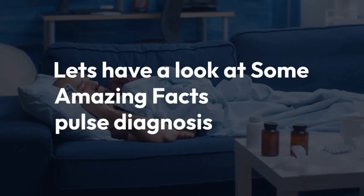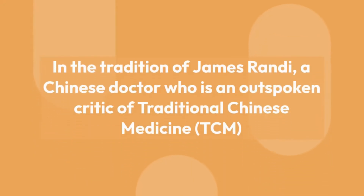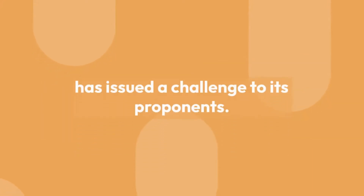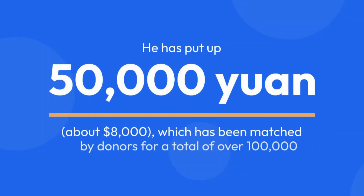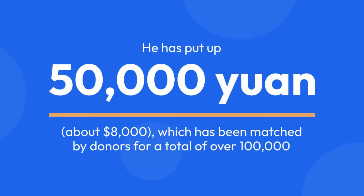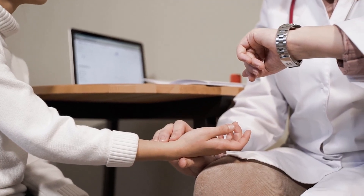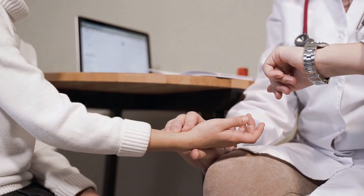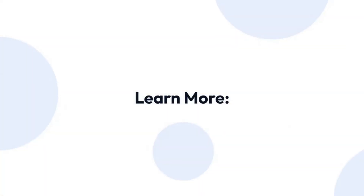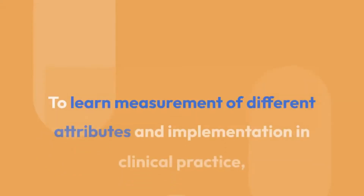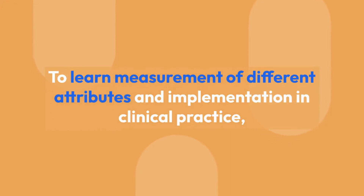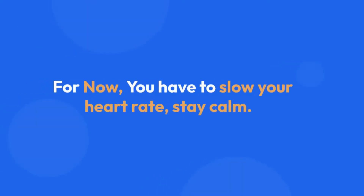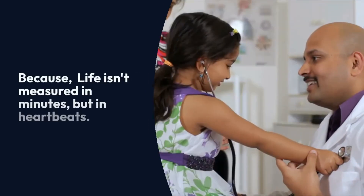Let's look at some amazing facts about pulse diagnosis. In the tradition of James Randi, a Chinese doctor who is an outspoken critic of traditional Chinese medicine has issued a challenge to its proponents, putting up 50,000 yuan — about $8,000 — matched by donors for a total of over 100,000 yuan, to any TCM practitioner who can use pulse diagnosis to accurately determine whether female subjects are pregnant. In this course, we will explore the universe of the pulse — measurement of different attributes and implementation in clinical practice, along with amazing facts and research in traditional medicine. For now, slow your heart rate, stay calm — because life isn't measured in minutes, but in heartbeats.